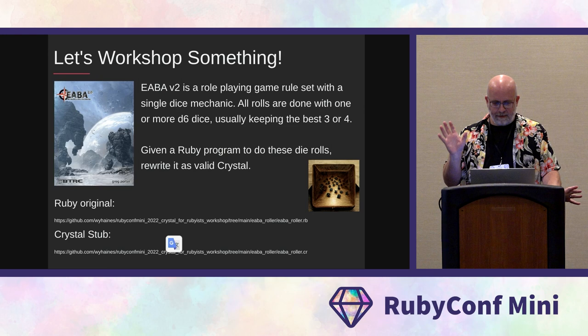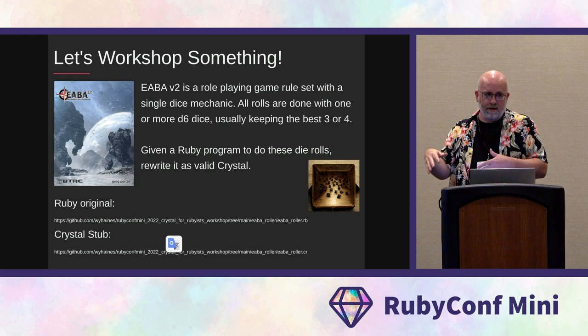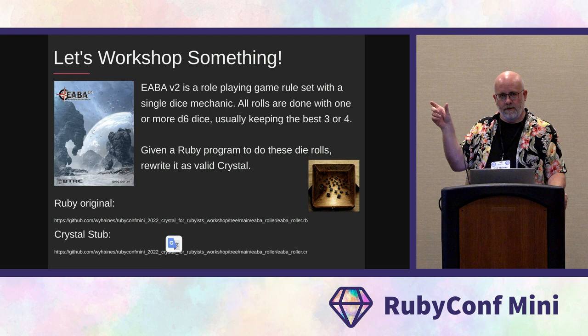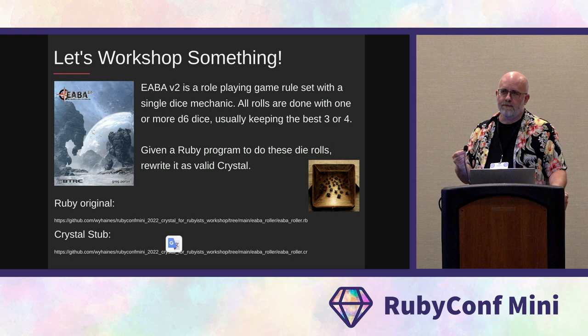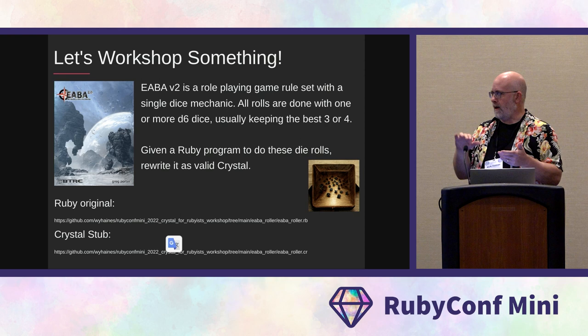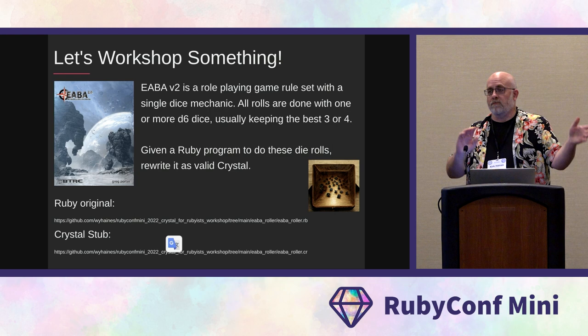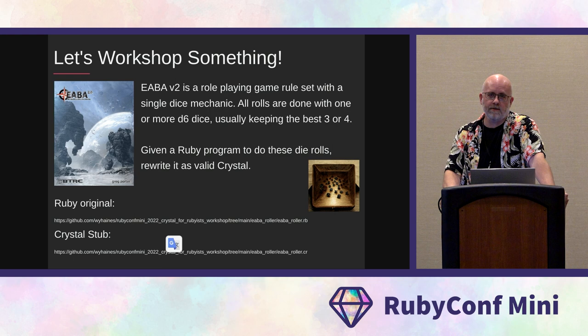The other thing I have is a little exercise in the repo: a Ruby program implemented as a dice roller for a role-playing game. I implemented it in Ruby and there's a stub in the repo of a Crystal implementation, but it's not completed. The challenge is to take the Ruby version and make it work in Crystal. There is a finished version also in the repo if you want to check your work. It's an interesting exercise in taking a working piece of Ruby that isn't just two or three lines and converting it into working Crystal.